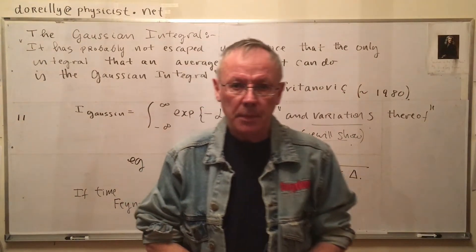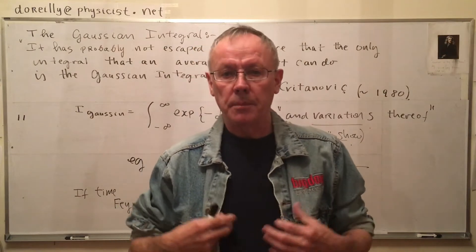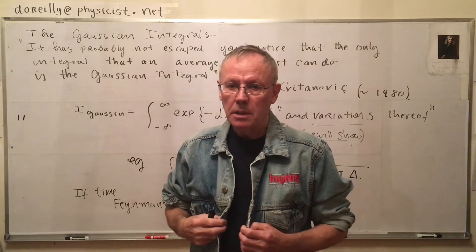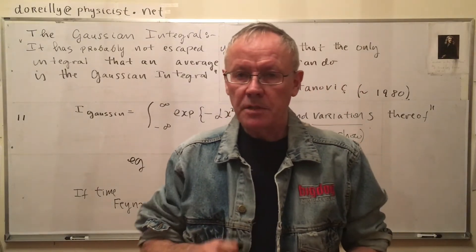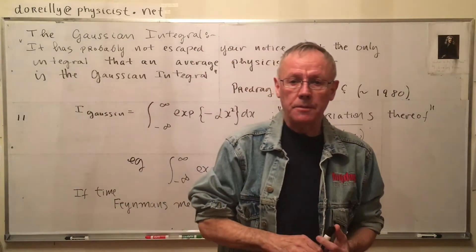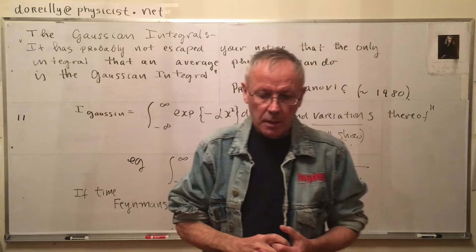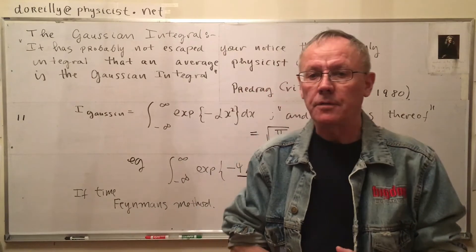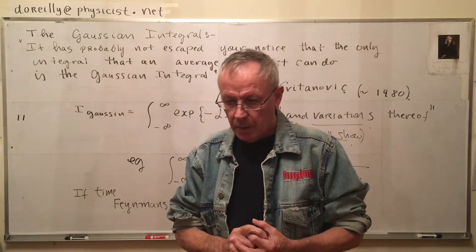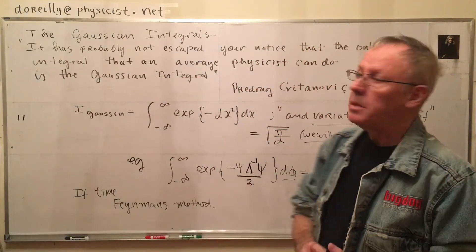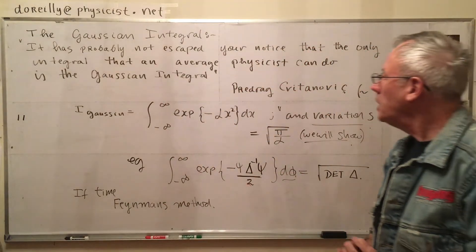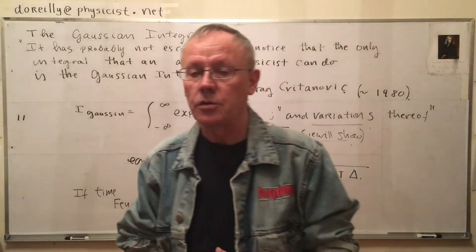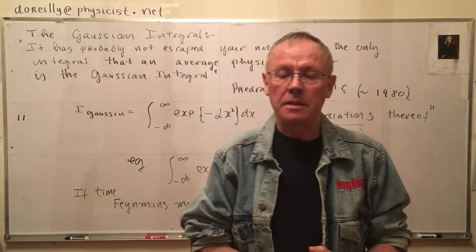Good morning from New York City, it's only 5:30 a.m., and I'm going to talk about a very important integral in physics. Here's a quote by one of my favorites, one of the cleverest physicists ever — the main person in nonlinear dynamics and chaos theory — who said: 'It has probably not escaped your notice that the only integral that an average physicist can do is the Gaussian integral.' Well, that's not entirely true, but there's an element of truth in it.